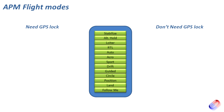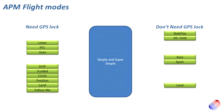We'll start at Stabilize and go all the way through to the bottom, which is Follow Me. An important thing to note is that a number of these modes require a GPS lock before you can take off. Obvious ones like Return to Launch need a GPS lock to store the home position when armed. So let's split this list into two: modes that need a GPS lock, and those that don't.